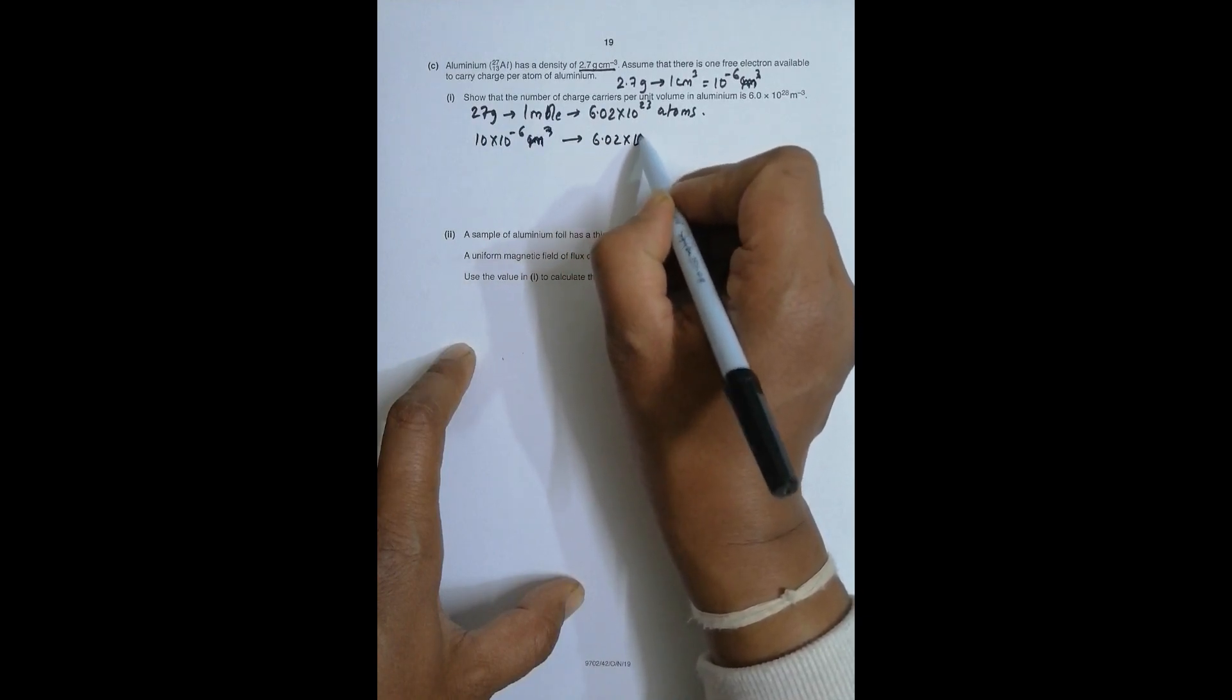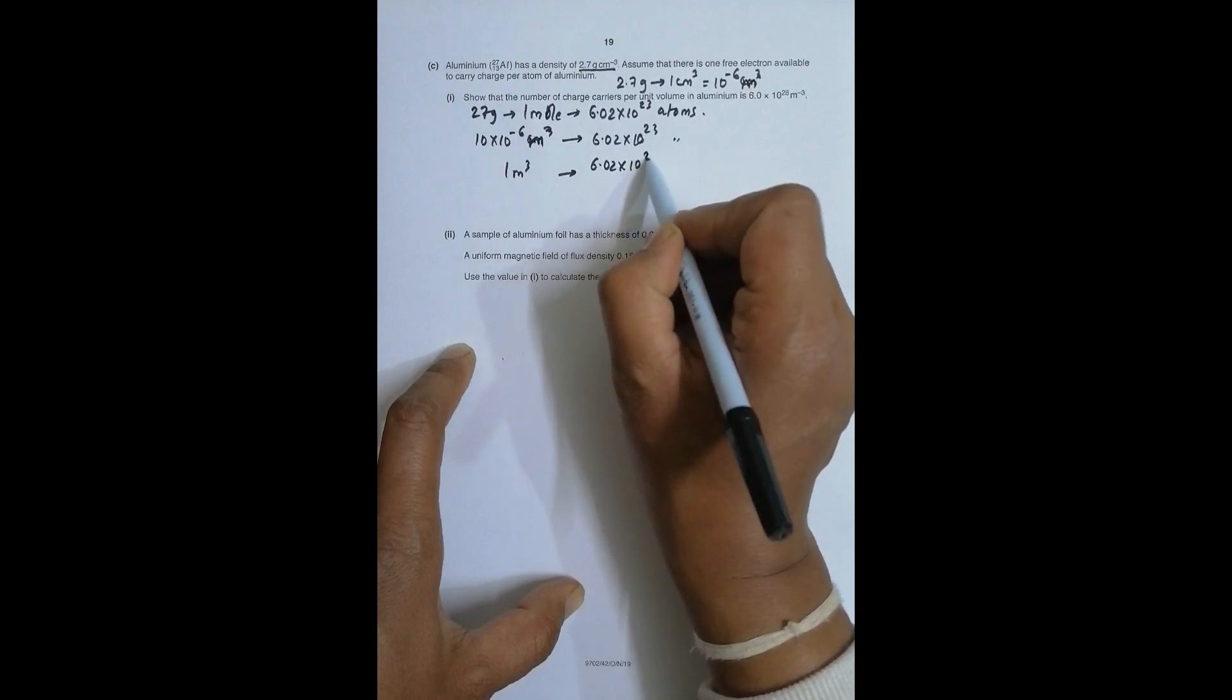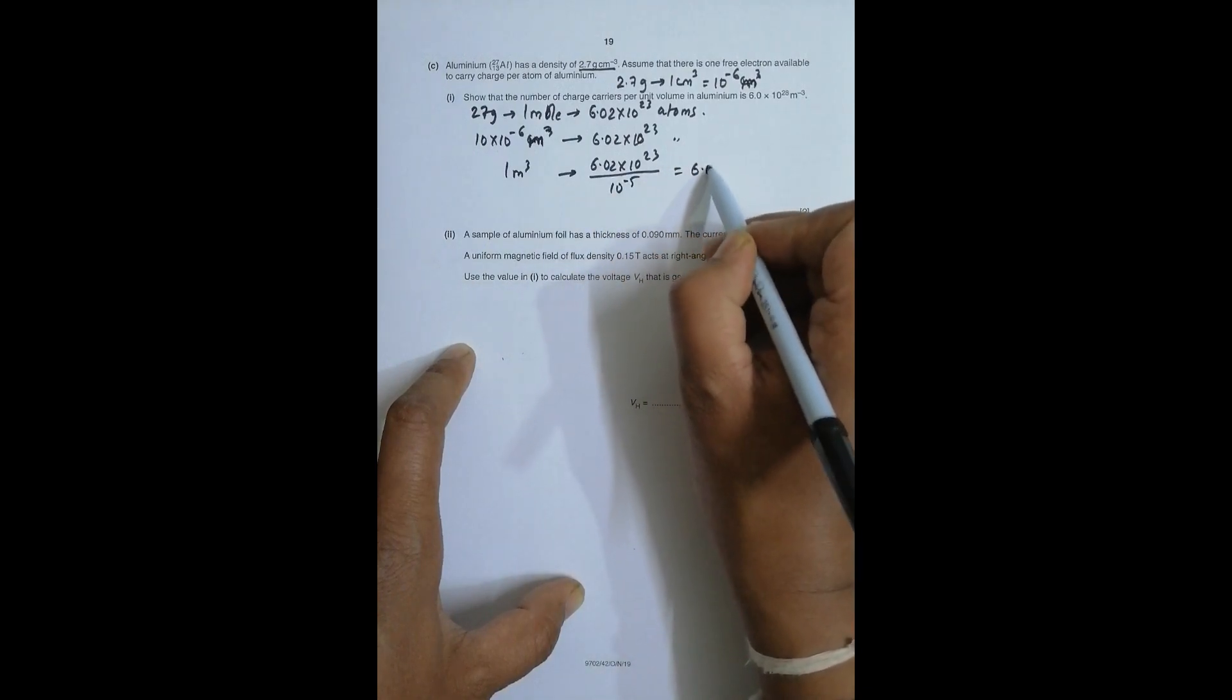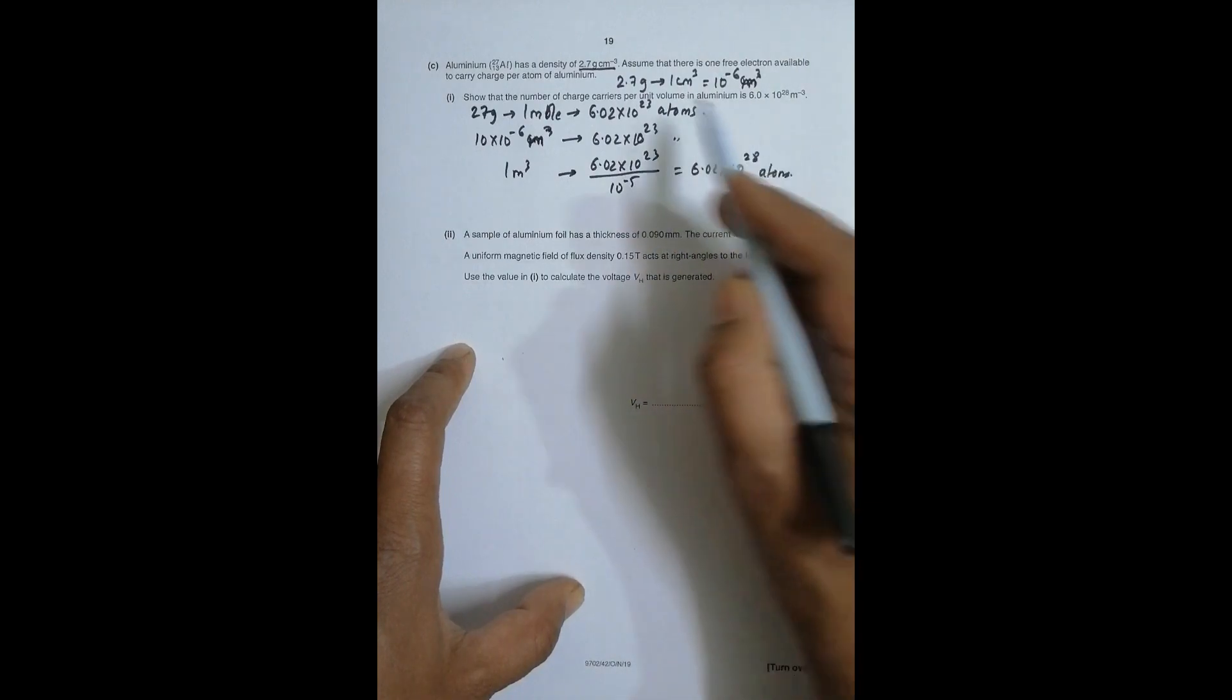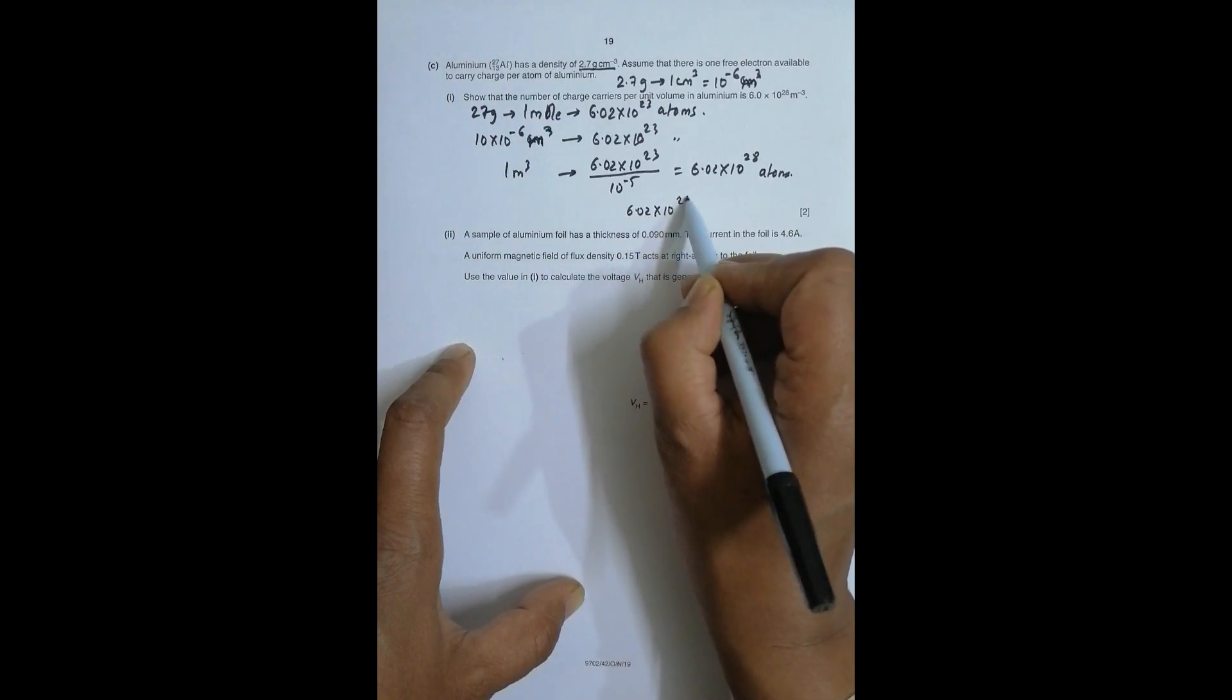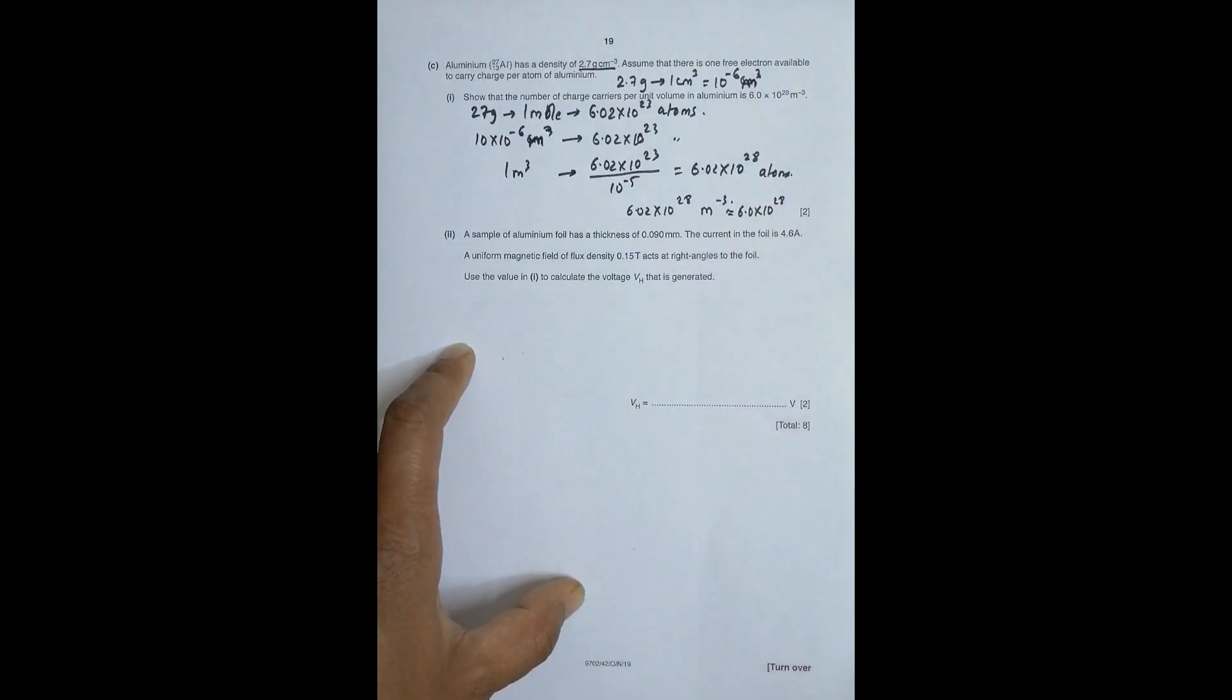So one cubic meter means I have 6.02 times 10 to the power 23 divided by 10 to the power minus 5, that becomes 6.02 times 10 to the power 28 atoms. So the required quantity, number of charge carriers per unit volume, is equal to 6.02 times 10 to the power 28 per cubic meter. This answer is similar to this, so nearby 6.0 times 10 to the power 28.